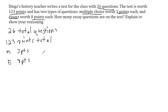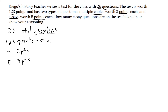This problem gave us two different totals: a total number of questions and a total number of points. Then they gave us some parts — multiple choice questions are three points each and essay questions are eight points each. So they gave us some totals and some parts. Let's start with the total number of questions, and forget about the points for a second, because 26 is about questions and 123 is about points.